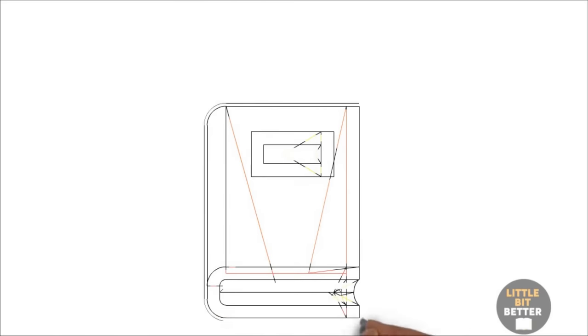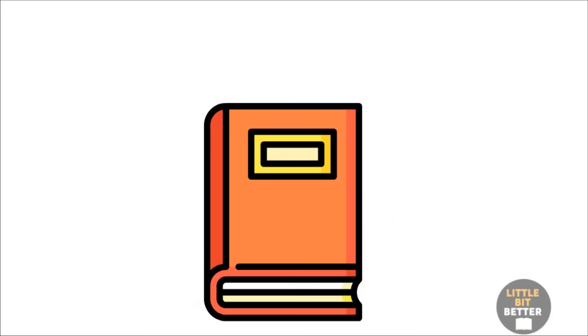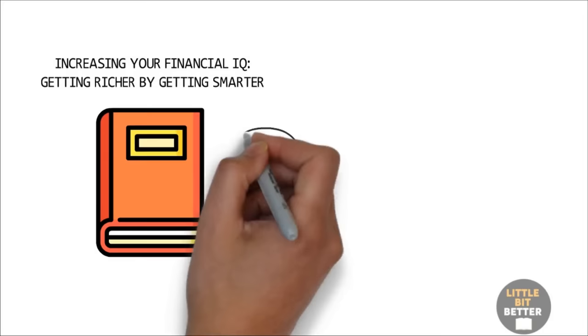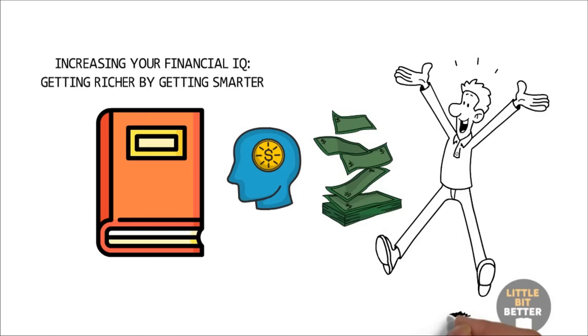Today, I'm going to summarize another book from Robert Kiyosaki called Increasing Your Financial IQ, Getting Richer by Getting Smarter. According to Kiyosaki, there are five basic financial IQs. If you want to get rich and most importantly, stay rich, then you have to have all five of them.